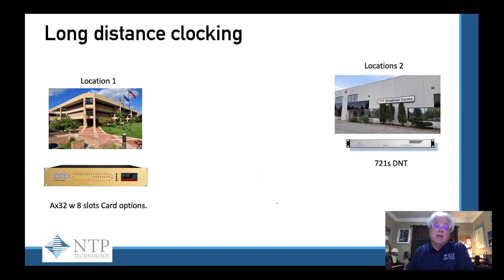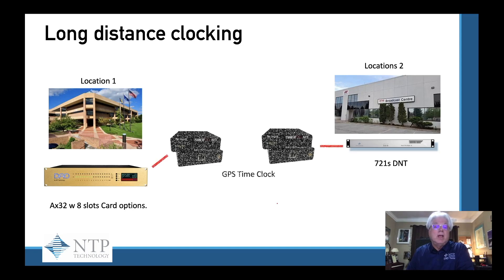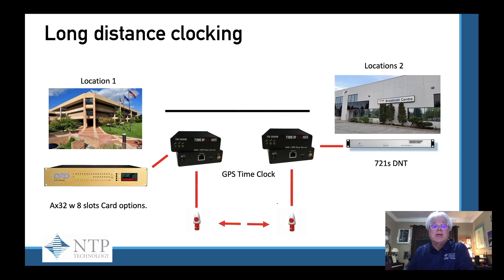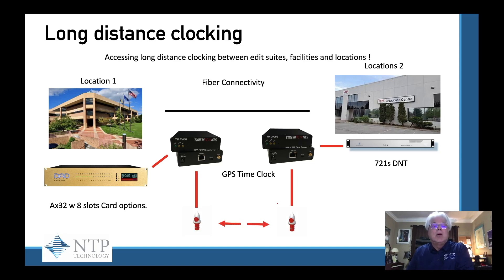So how do we take care of long-distance clocking between facilities, cities, or even just edit suites? If you connect your AX32 with its eight-slot card options to a GPS time clock, and then an additional interface — the 721S D&T in this example — to an additional GPS time clock, connect those to their satellites, we are then sharing files, giving us fiber connectivity. Long-distance clocking between edit suites, facilities, and even locations is possible, and this is how most facilities are doing it — through a GPS time clock.